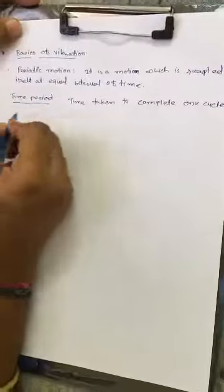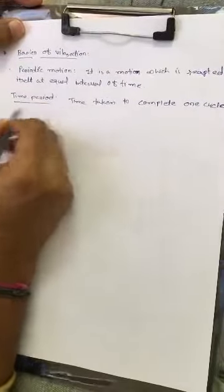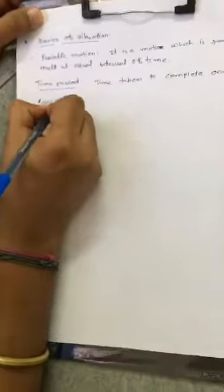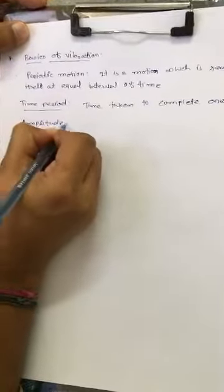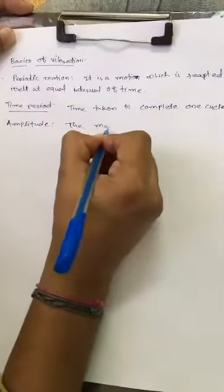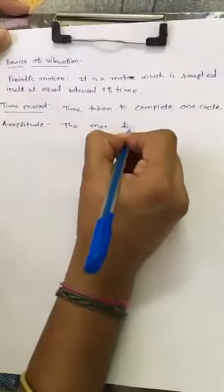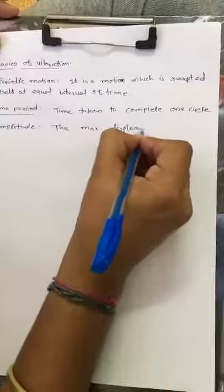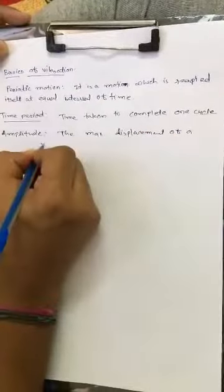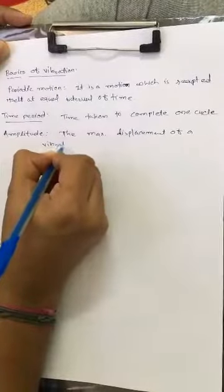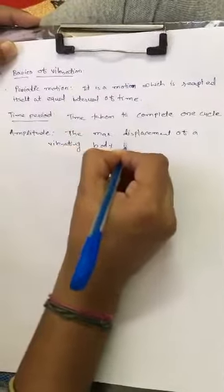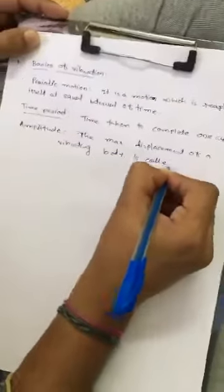This is called the time period. Next is amplitude. Amplitude is the maximum displacement of a vibrating body.